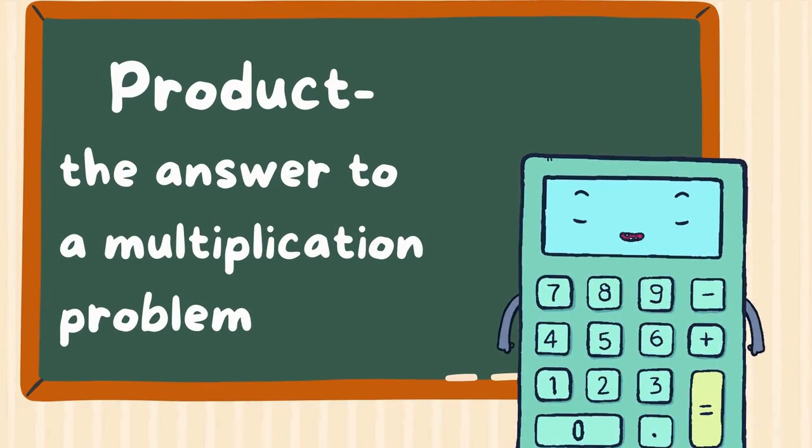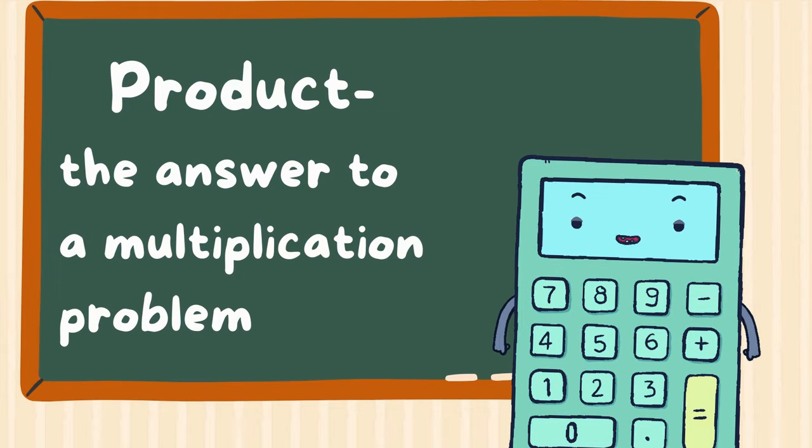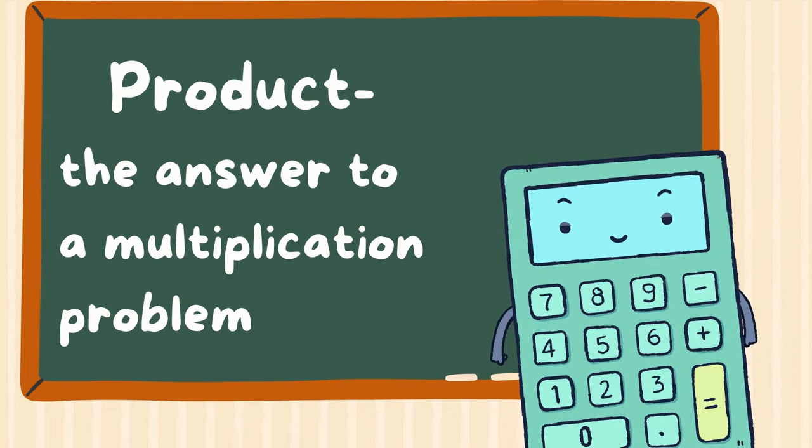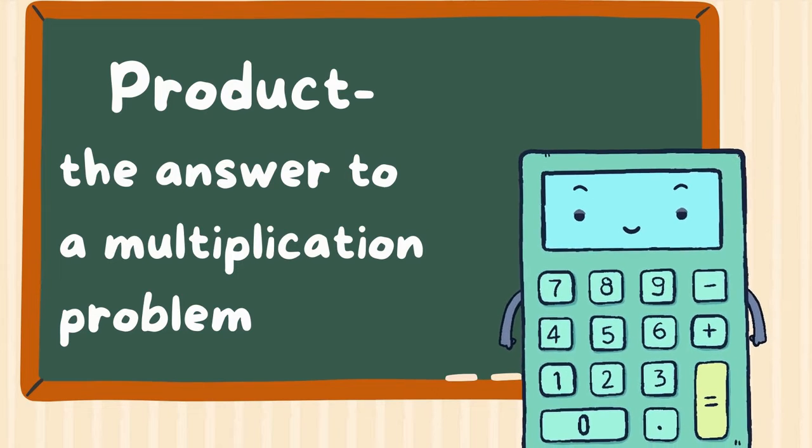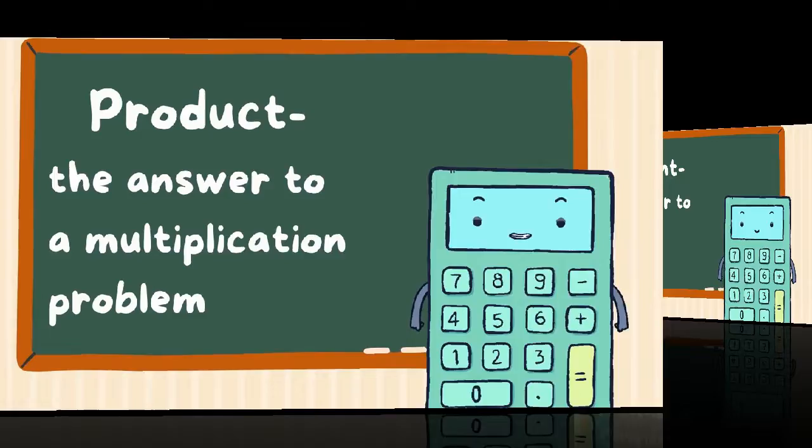The third word is product, spelled P-R-O-D-U-C-T. A product is the answer to a multiplication problem. When we multiply two numbers, called factors, together, the total number is called the product.